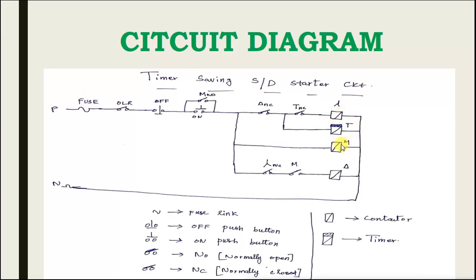That is why the motor starts. We have to set the motor, and once you set the timer — set the timer — and this contactor, as part of the main contact, star contactor. So star contactor NC — so this is closed. The motor is already closed. So NC, so eye over.